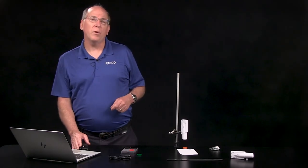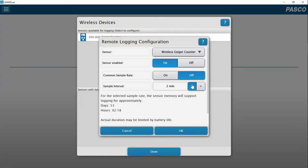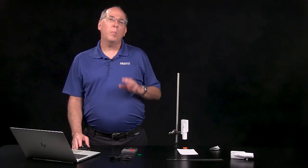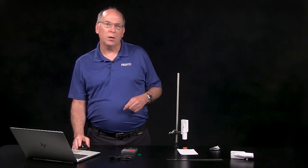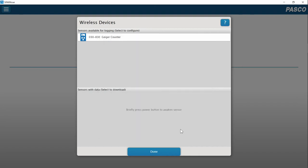I'll increase the sample interval to 10 minutes to get a higher background count. The software gives an estimate of how long it can collect data based on the sensor's memory, but battery power also needs to be considered. I can defer the start of logging to when I press the power button or click OK and Start Logging Now.